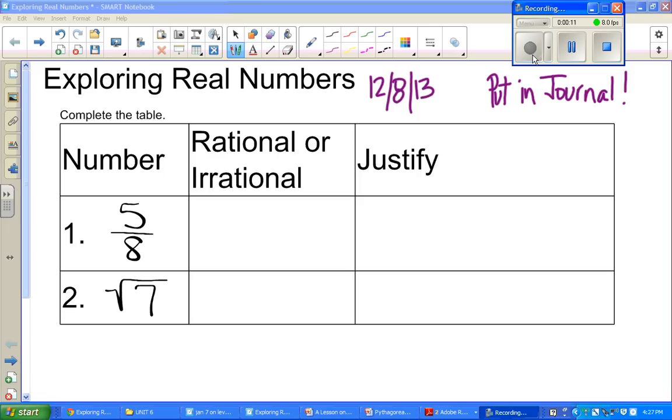We're going to jump in with number one. We have the fraction five-eighths. And if you remember that we talked about before, whenever we have a fraction, if it can be written as a fraction, as long as it does not have a goofy number such as pi in it, it's a fraction, it's going to be a rational number.